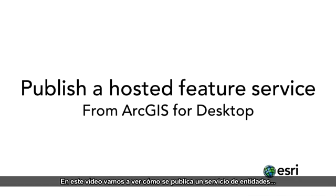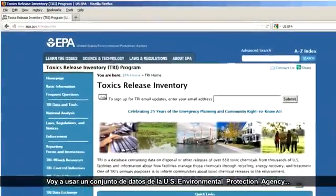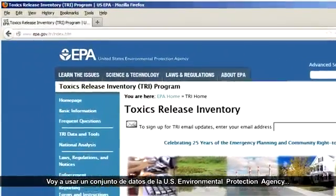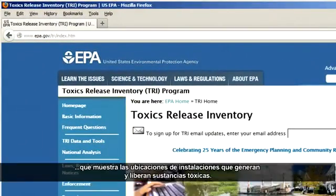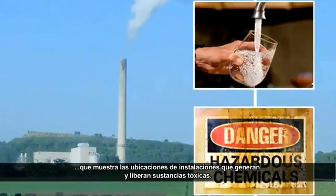In this video, I'll demonstrate how to publish a feature service from ArcGIS for Desktop to ArcGIS Online. I'm going to use a dataset from the U.S. Environmental Protection Agency that shows the locations of facilities that produce and release toxic substances.